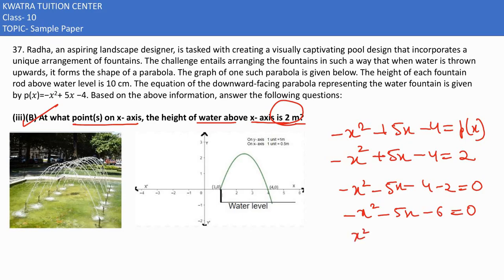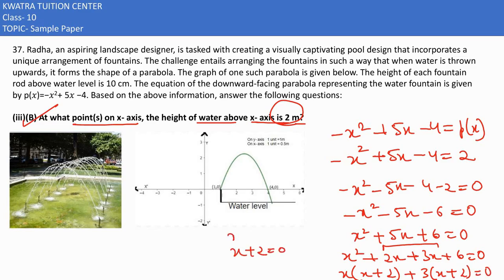Taking out the negative, we factorize. Splitting the middle term: x² + 2x + 3x + 6, which gives (x + 2)(x + 3) = 0. So x + 2 = 0 and x + 3 = 0, giving x = -2 and x = -3.